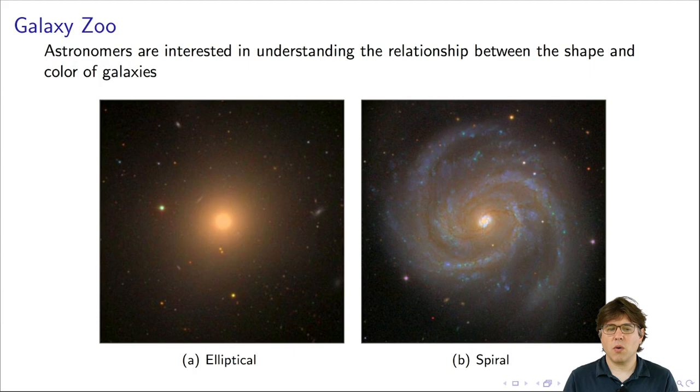The first example comes from astronomy. Simplifying a great deal, astronomers are interested in understanding many things. One is the relationship between the shape and color of galaxies. You can see on your screen two galaxies. The one on the left is an elliptical galaxy, and the one on the right is a spiral galaxy like the Milky Way. There's a hypothesis in astronomy that generally spiral galaxies are blue and elliptical galaxies are red. At the time, some astronomers were interested in studying this relationship more carefully, particularly finding examples of galaxies that did not meet this pattern.